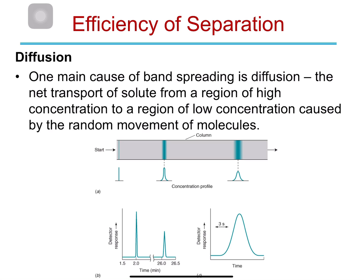One reason why we see band spreading in the column is diffusion. As solutes are retained on the column and moving through it, they move via diffusion — the movement of particles from an area of high concentration to an area of low concentration. This causes the spreading and broadness of your peak, which is why your peaks take the Gaussian shape as they come out of the column.